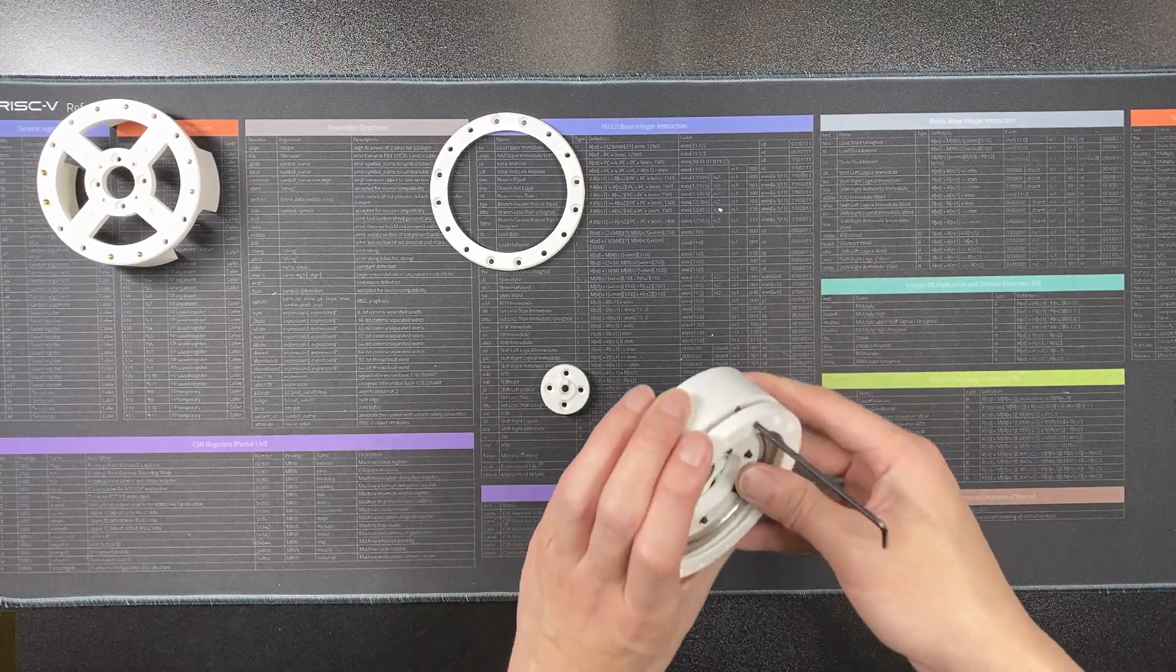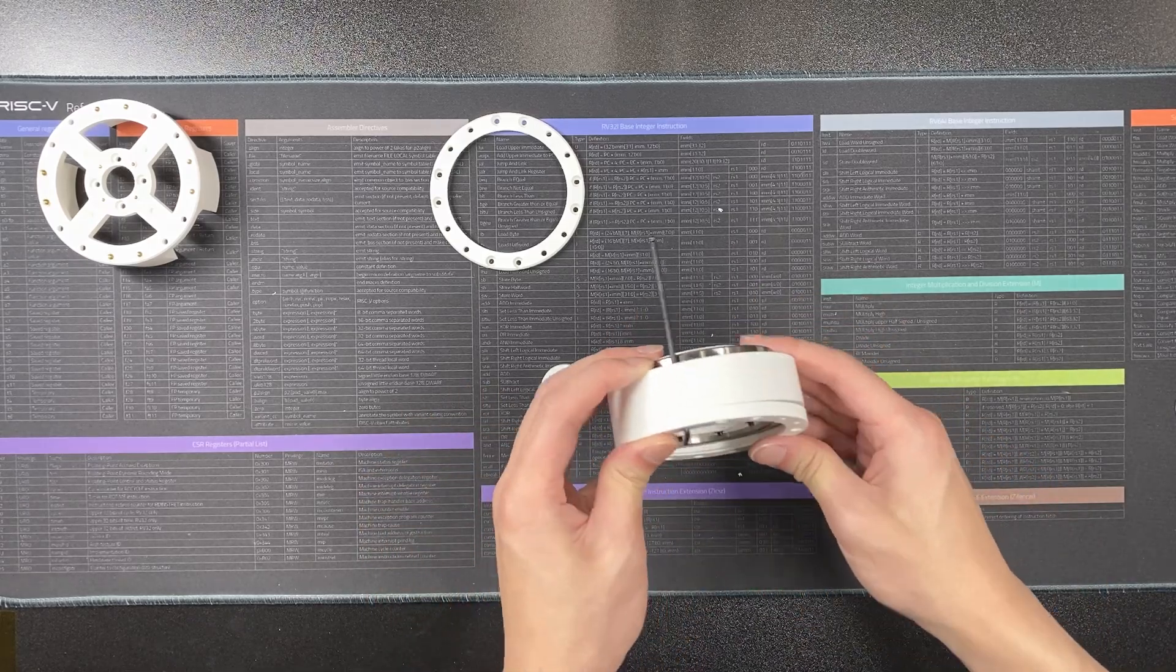Here, we can use a hex wrench or a screw to help align the three parts of the housing.